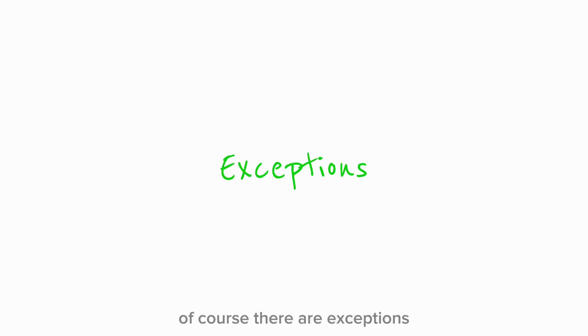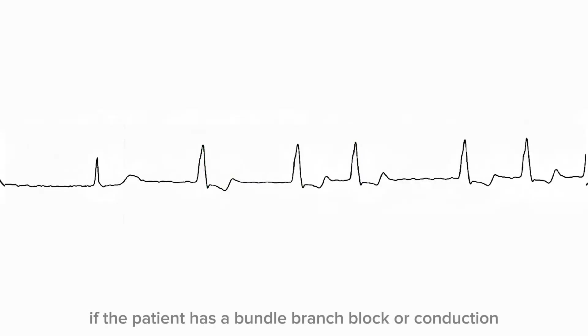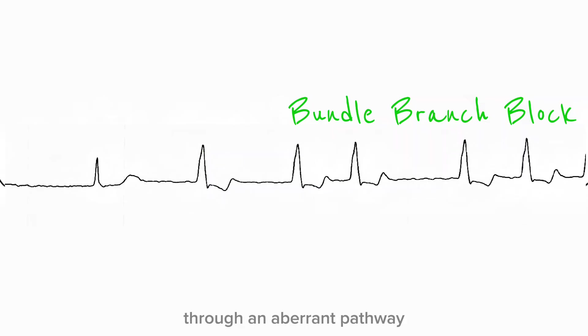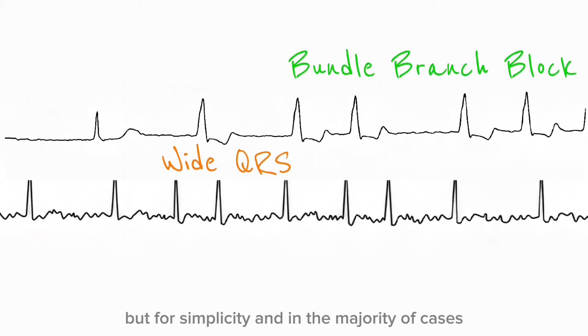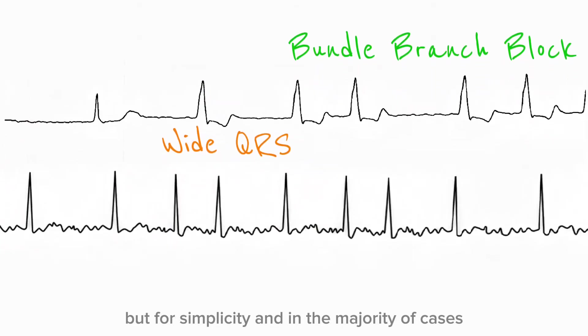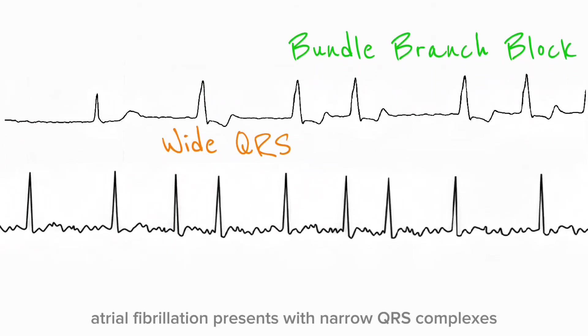Of course, there are exceptions. If the patient has a bundle branch block or conduction through an aberrant pathway, the QRS complexes may appear wide. But in the majority of cases, atrial fibrillation presents with narrow QRS complexes.